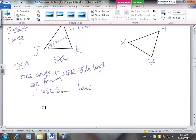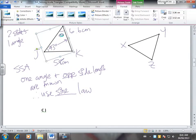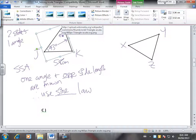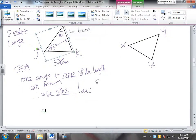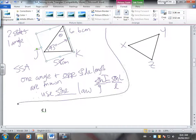So one angle and opposite side length are known. And therefore, we'll use what kind of law? Pause the video, think about it for a second. We're going to use sine law. And if we're looking for this angle up here, which is angle L, we can use sine J over J, because those are the two we know, equals sine L over L. Or you can also use J over sine J equals L over sine L, either way.